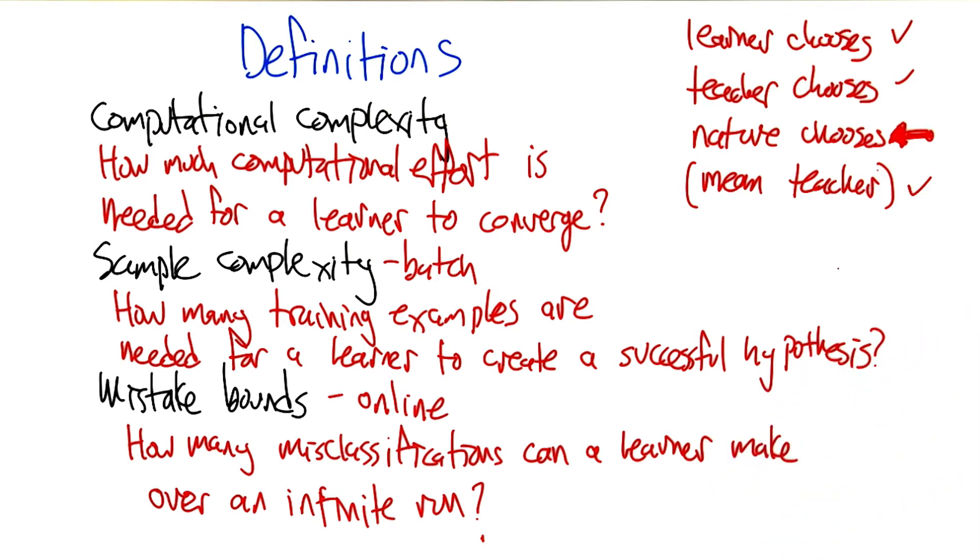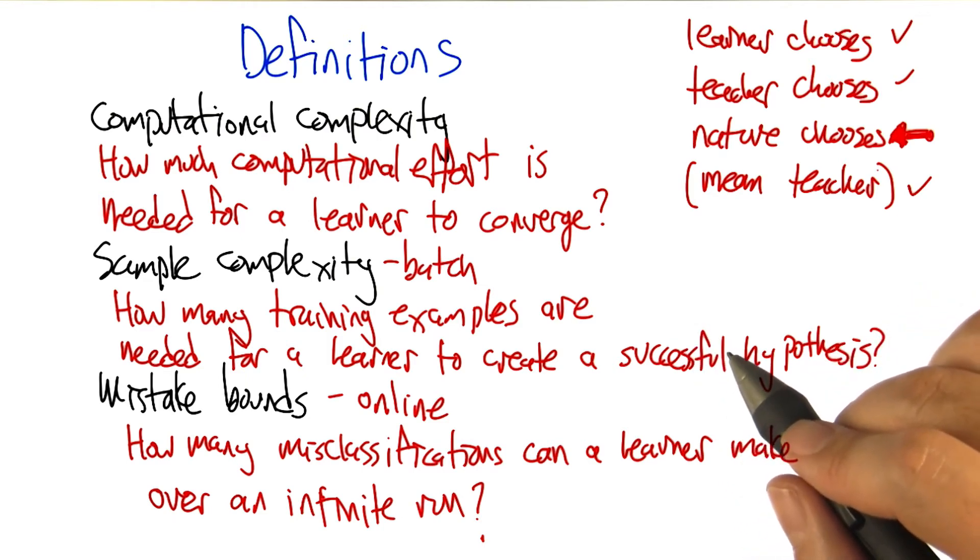Mike, can I ask you a question? You said something I thought pretty interesting. For computational complexity, you said how much computational effort is needed for a learner to converge to the right answer. Is that a requirement when you talk about computational complexity, or is it just that you need to know how much computational effort is needed for a learner to converge to something?